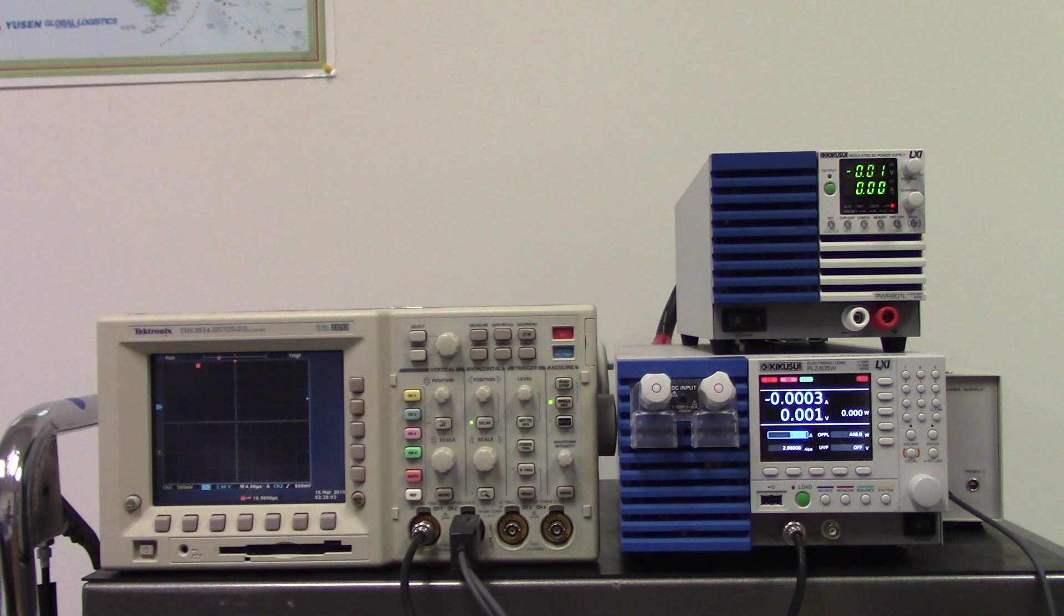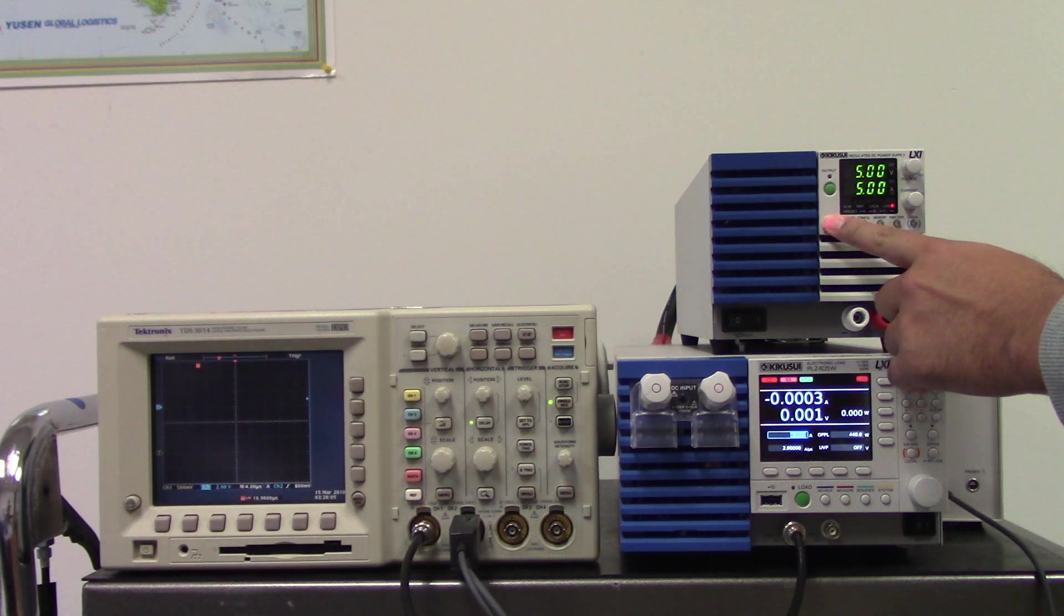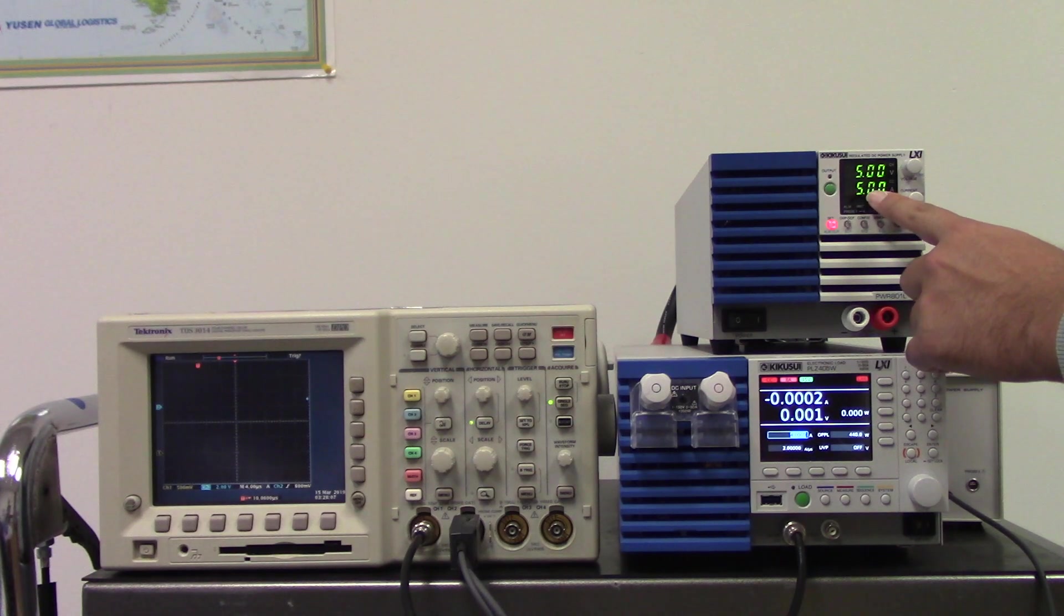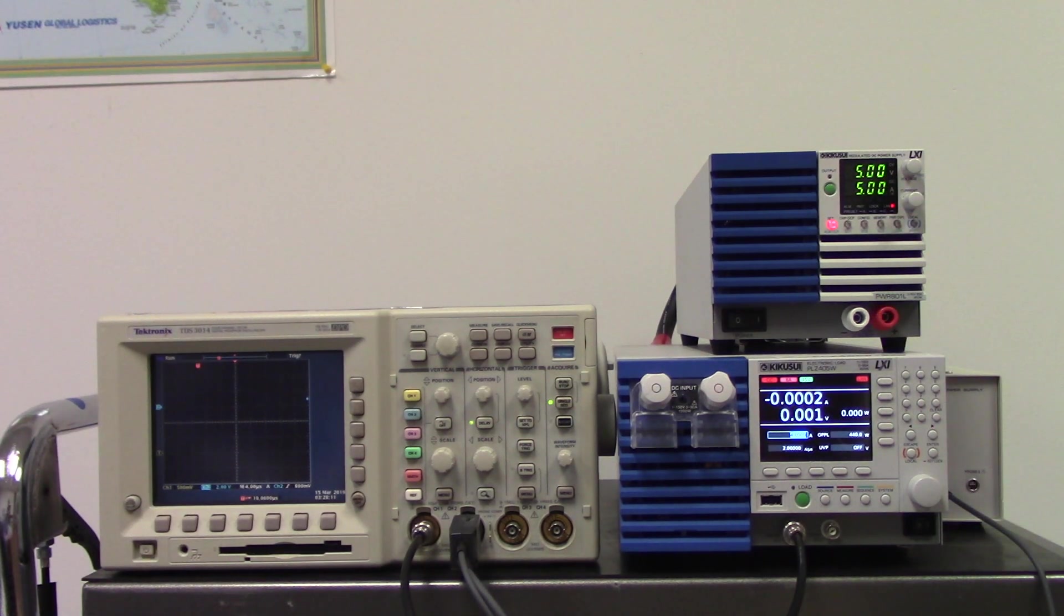For the PWR401 DC power supply we have the settings at 5A and 5V. We have the electronic load in CC mode.